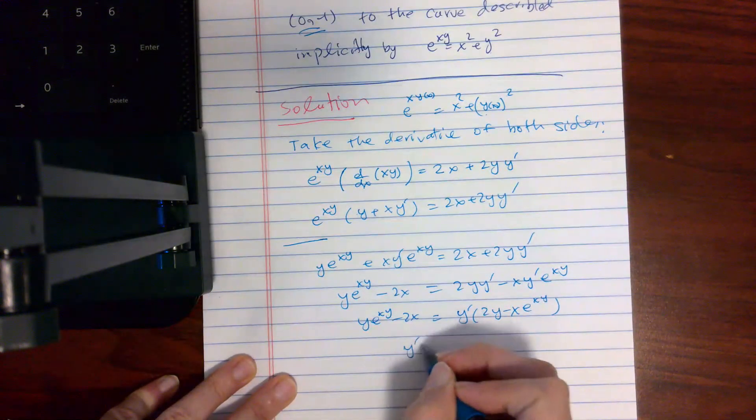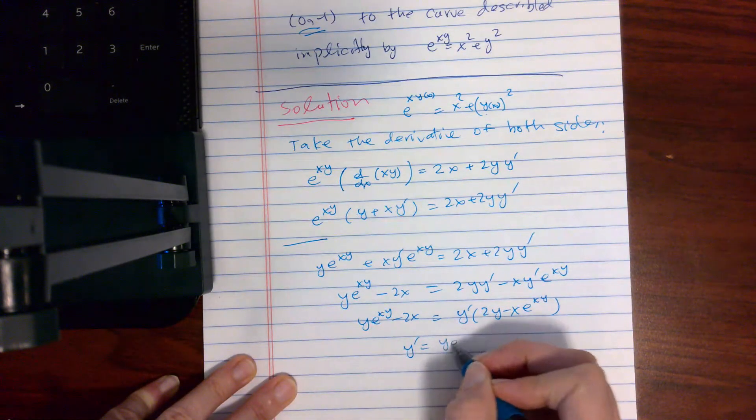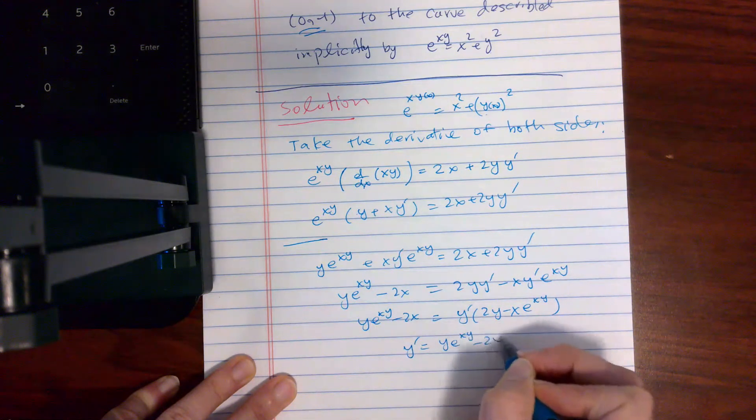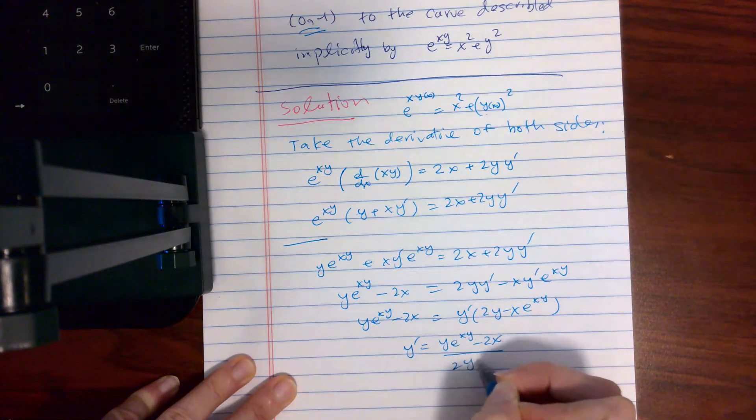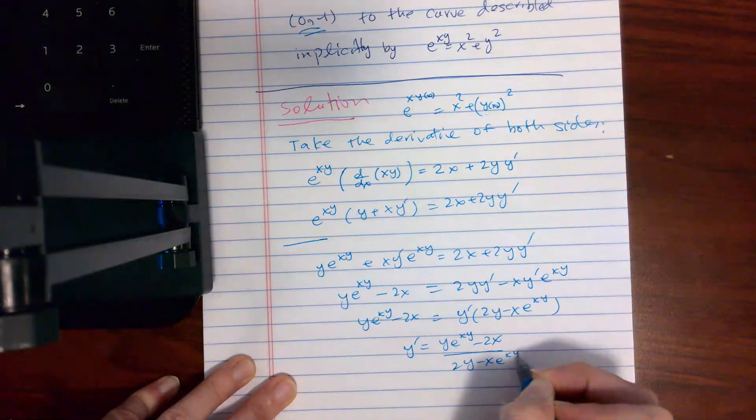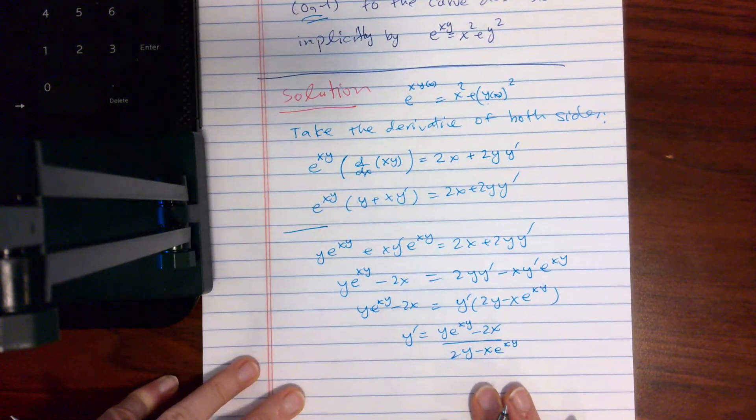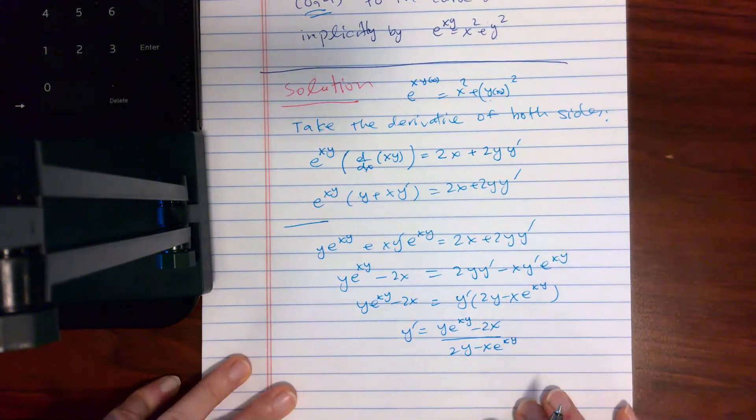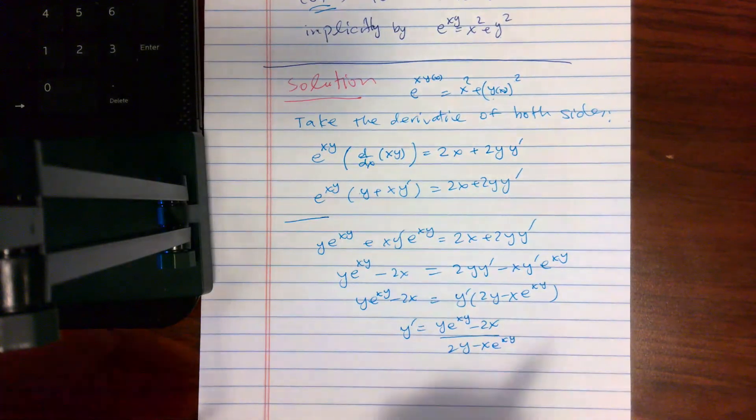And y' is going to be y e^(xy) minus 2x over 2y minus x e^(xy). Now plug in the x, 0, and y, negative 1.